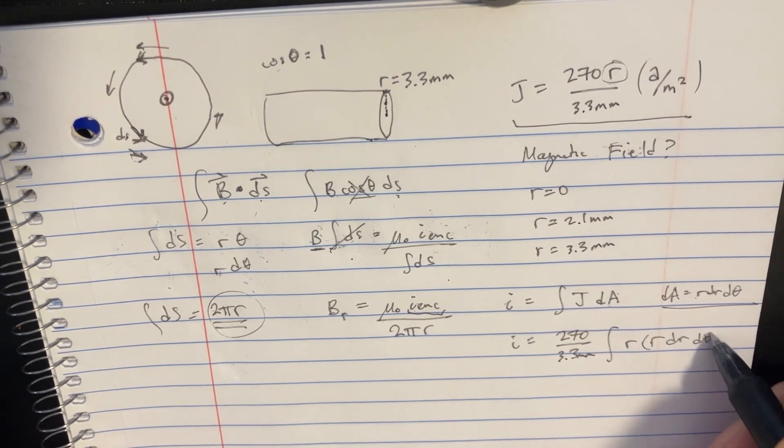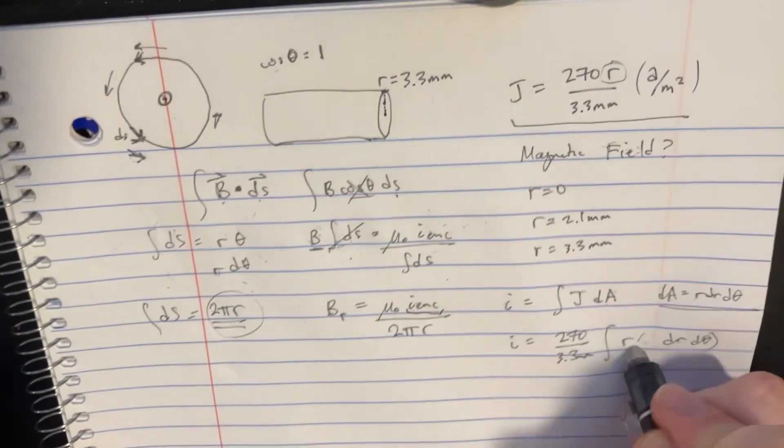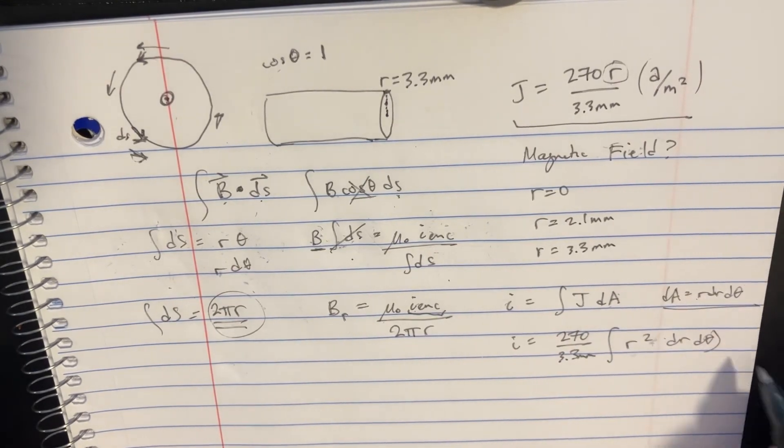And then this, of course, is supposed to be like r squared, right? So we can kind of do that r squared, dr d theta.